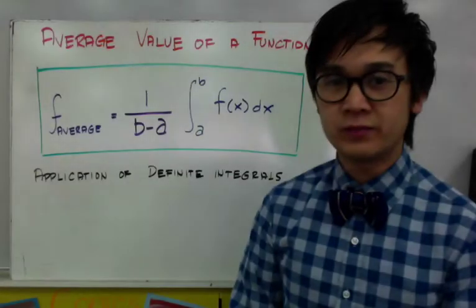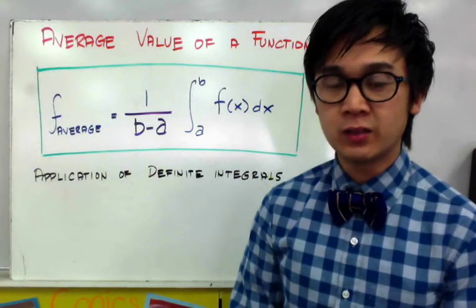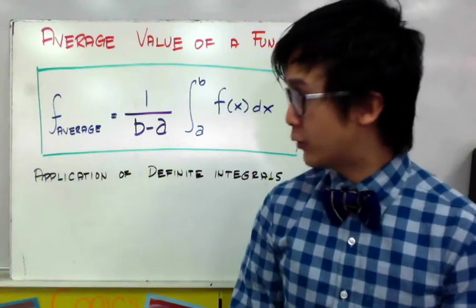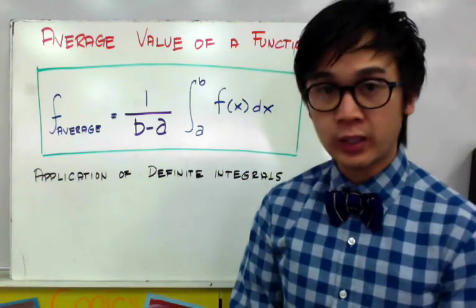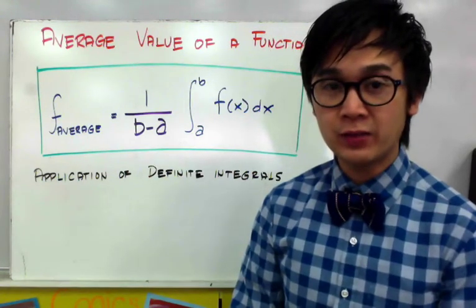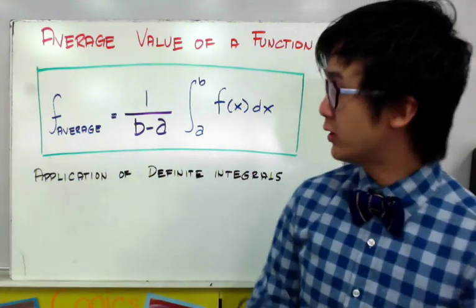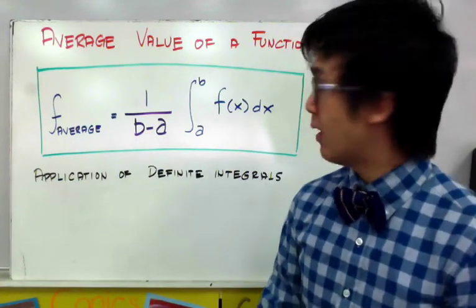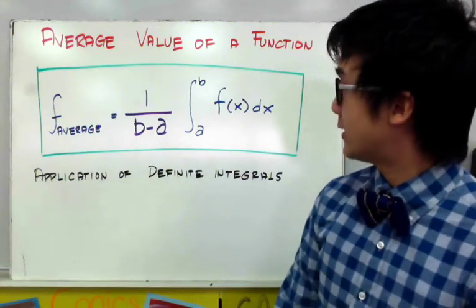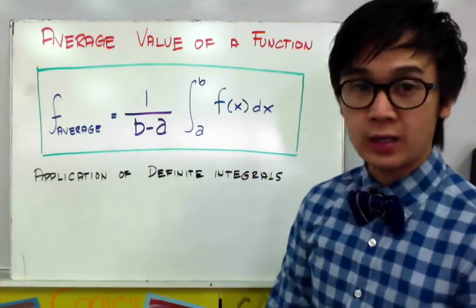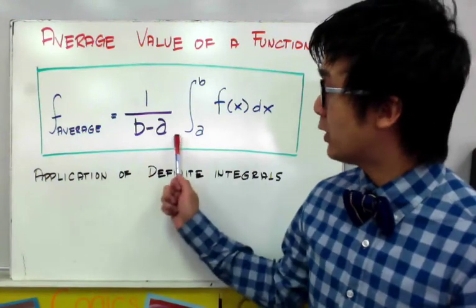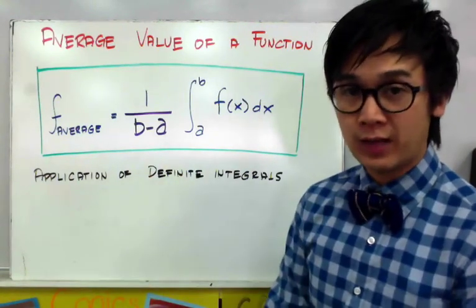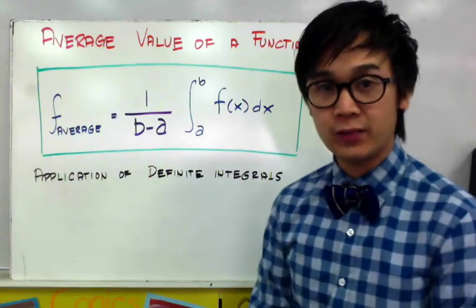One of the applications of the definite integral is to find the average value of a function. We're going to be working on the formula for finding the average value of a function, given by 1 over b minus a times the integral of f of x dx from a to b. This is what we will use in today's lesson in finding the average value of a given function.